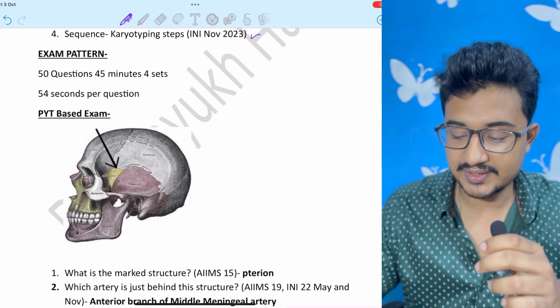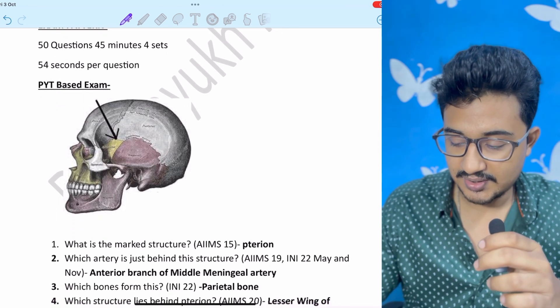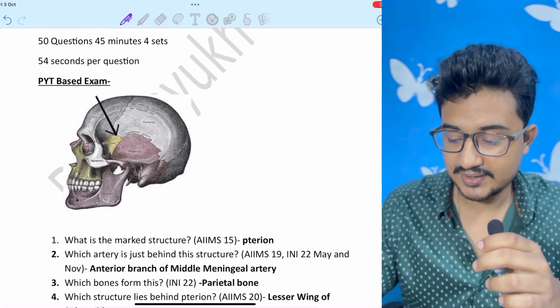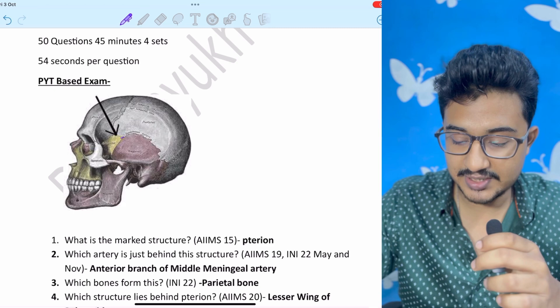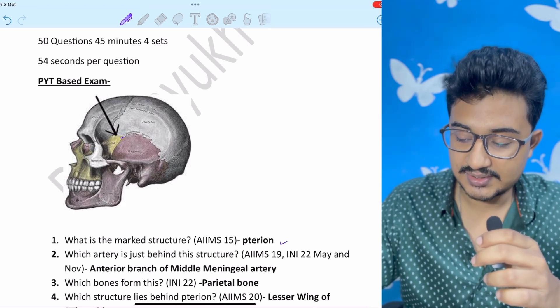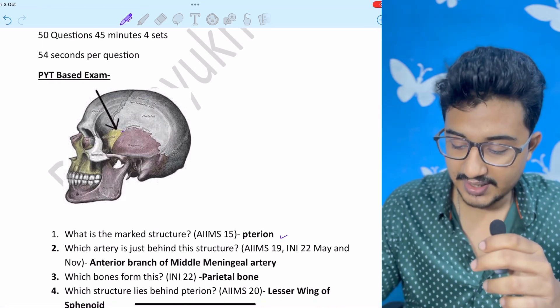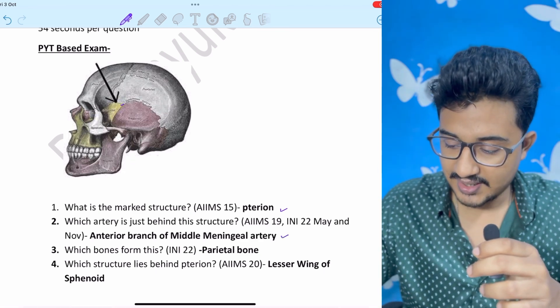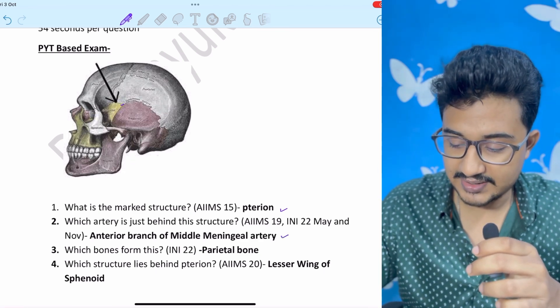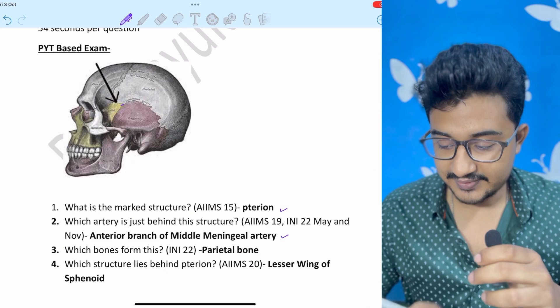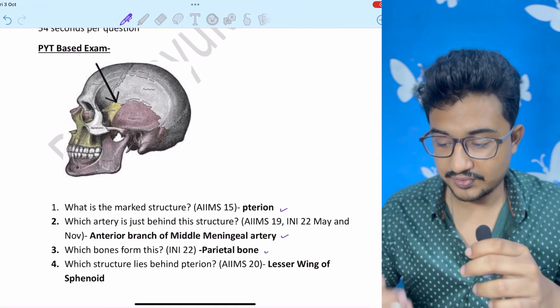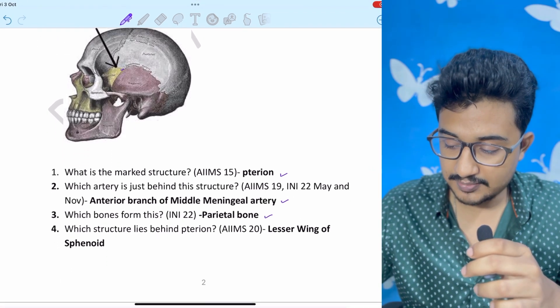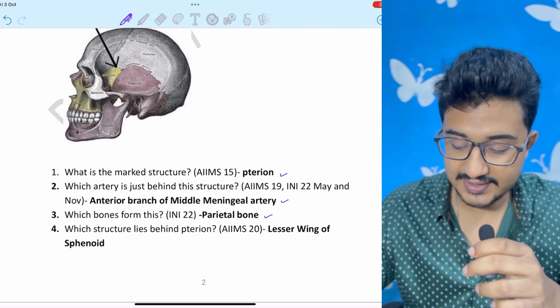Now to give an example, see the image. In AIIMS 2015 it was asked giving the image what is the structure called. The answer was simple terion. After that which artery passes behind the structure. Anterior branch of medial meningeal artery. After that INICET 2022 which bones form this.